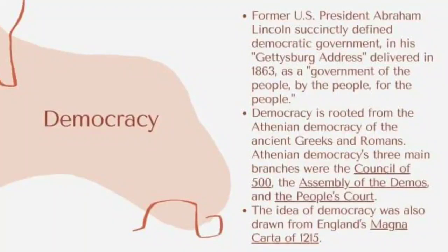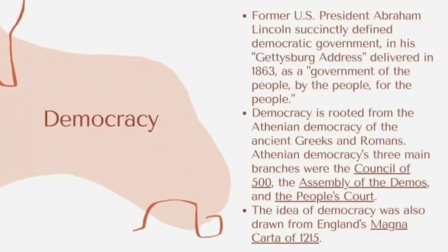Former U.S. President Abraham Lincoln famously defined democratic government in his Gettysburg Address delivered in 1863 as a government of the people, by the people, and for the people. This is Lincoln's popular speech dedicated to the soldiers who died during the American Civil War for democracy, where he said that these dead shall not have died in vain, that this nation under God shall have a new birth of freedom, and that government of the people, by the people, for the people shall not perish from the earth. Meaning, the government and democracy are for the people alone and not for those in power.